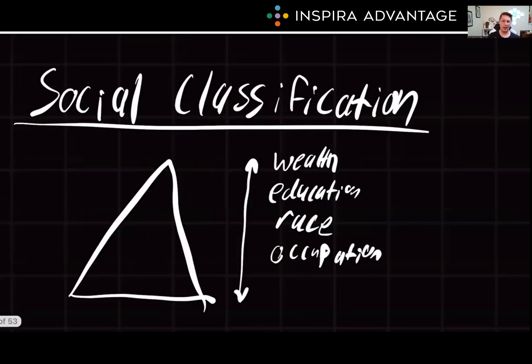Beginning with social classification. This is the system by which society ranks categories of people into a hierarchy. This hierarchy can be based on factors such as wealth, occupation, race, or education. For example, a CEO might be considered to have a higher social status than a janitor due to their differences in income and occupational prestige.